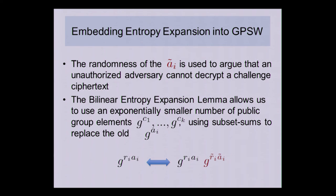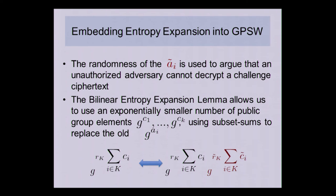We publish a small number of group elements g^(c_1) through g^(c_k) and use subset sums to replace the old a_i in GPSW. When we expand into the new subgroup, the subset sum structure extends and we get subset sums of the untethered c̃_i. This is where we plug in the bilinear entropy expansion: since c̃_i are no longer tied to the public parameters g^(c_1) through g^(c_k), we apply the lemma to change from a game where the c̃_i are subset-sum structured to one where they're independently randomly chosen for each k. This is the same as the old GPSW where the ã_i were independently random, so the same information-theoretic sub-argument can still be run and the rest of the proof proceeds identically.